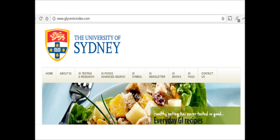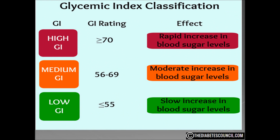The glycemic index is a ranking of carbs on a scale from 0 to 100 according to the extent to which they raise blood sugar levels after eating. The ranking is as follows: foods with a GI of 55 or less is considered a low GI food, foods with a GI of 56 to 69 is a medium GI food, and foods with a GI of 70 or higher is a high GI food.